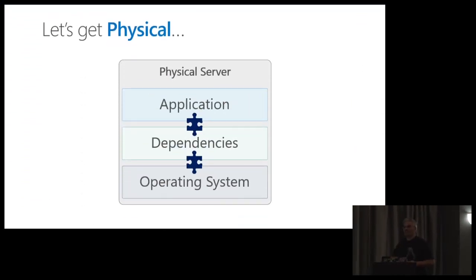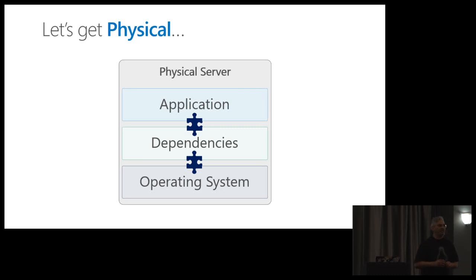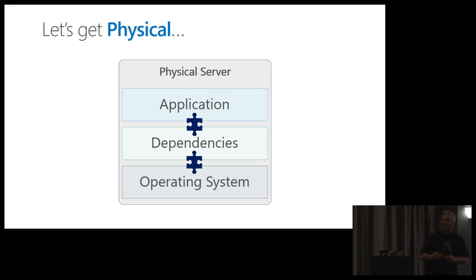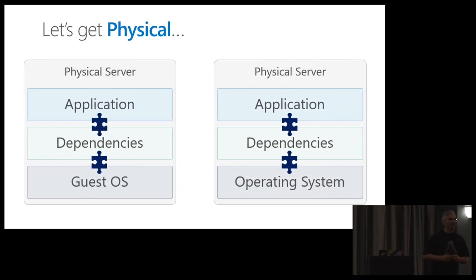Let's get physical. Back in the day, we'd be racking and stacking physical machines, and we'd put an operating system on it — of course, Linux — and we'd put various dependencies and libraries and things like that to run our application. It's not as easy as it looks because if you've got multiple applications on the same physical machine, invariably there'll be conflicts. Libraries don't work, or different versions of runtimes and things like that. What we'd do to isolate these is get another machine. The isolation that we needed meant putting new machines in there, and those machines became increasingly cheap, but there's wastage.